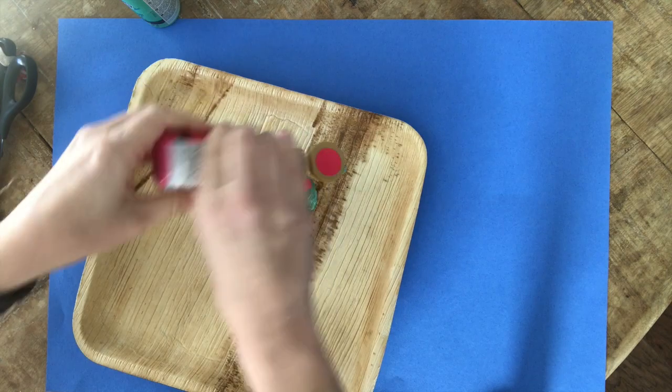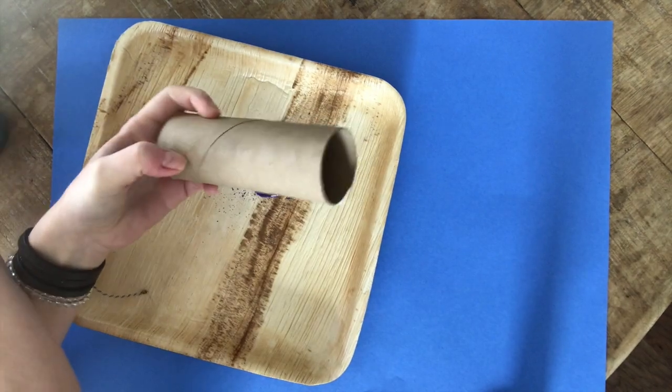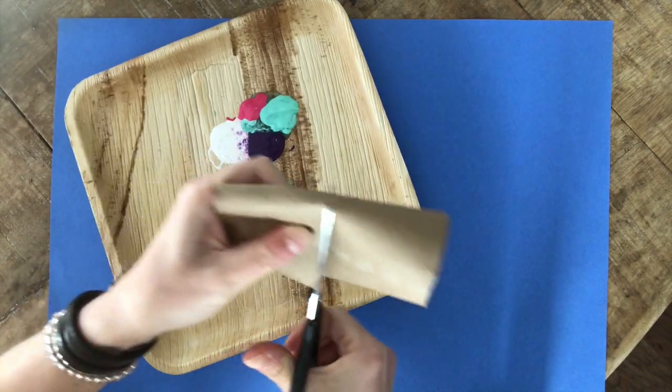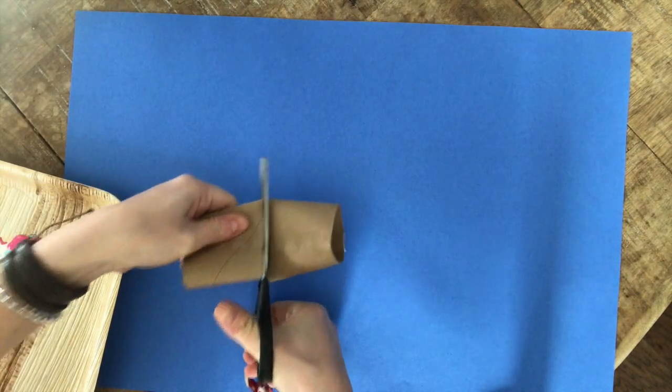Next, you're going to cut your toilet paper roll in half. You might need to get a parent to help you do this.